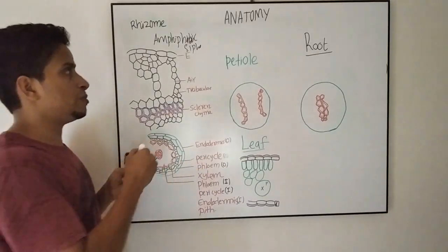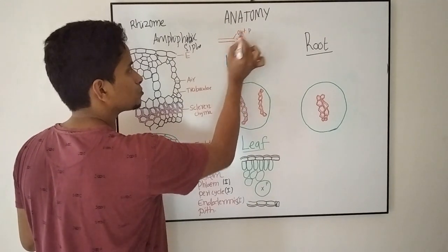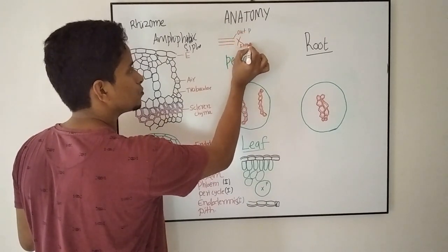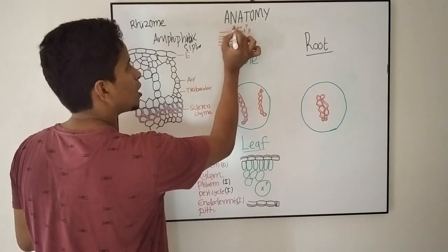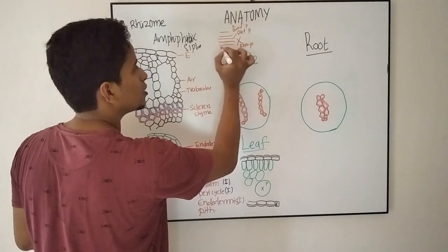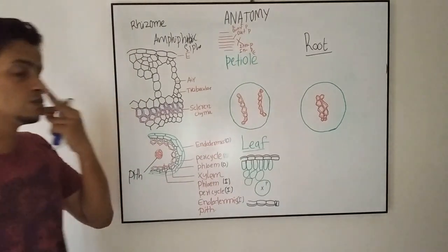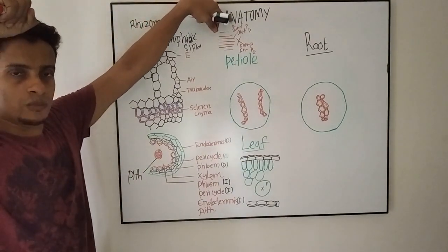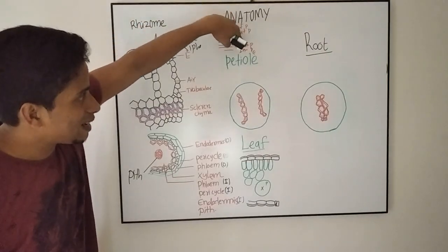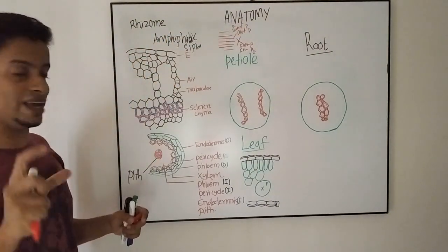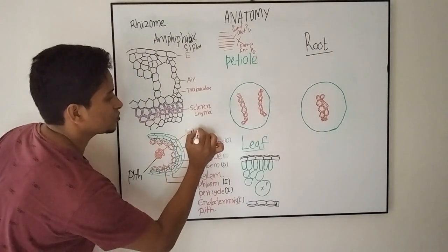The representation will be: this represents the xylem, this will represent outer phloem, inner phloem, outer pericycle, outer endodermis, inner pericycle, inner endodermis. So the order will be outer endodermis, outer pericycle, outer phloem — then the xylem siphon — inner phloem, inner pericycle, inner endodermis. So the last layer of the stele will be the inner endodermis. This is about the anatomical features of the rhizome.